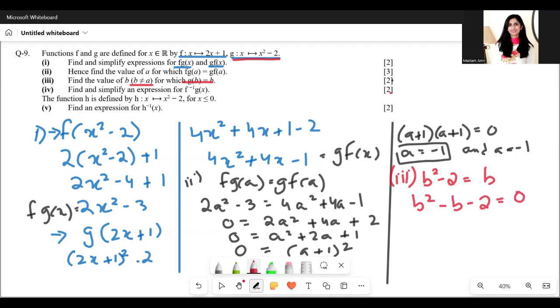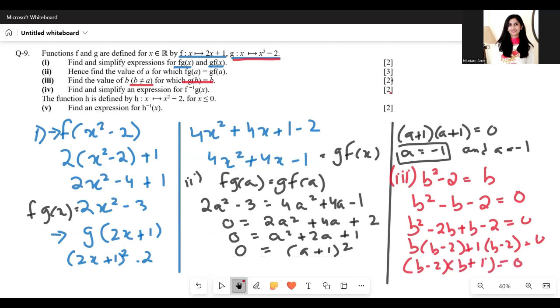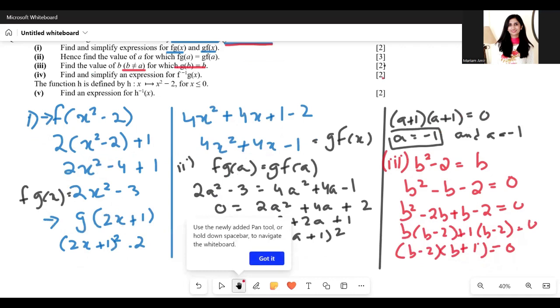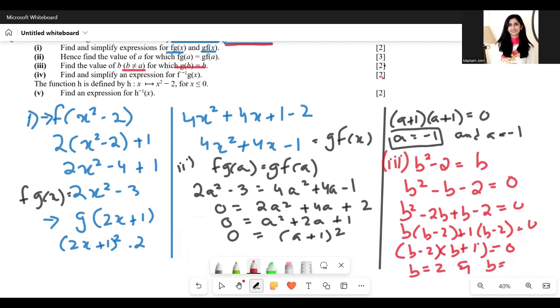Solve this: b squared minus 2b plus b minus 2 equals 0. I'm doing middle term breaking. b(b minus 2) plus 1(b minus 2). So (b minus 2)(b plus 1) equals 0. So we're getting two answers: b equals 2 and b equals negative 1.